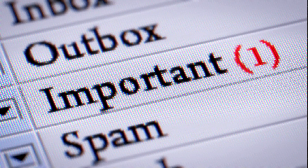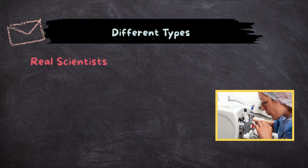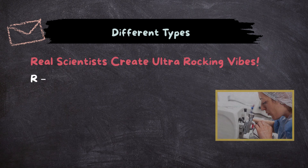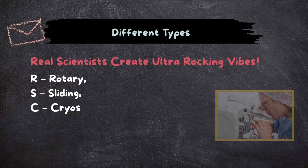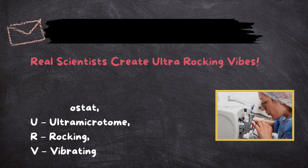Now that we know why Microtomes are important, let's talk about the different types. Mnemonic for Microtome types: 'Real Scientists Create Ultra-Rocking Wipes' — R for Rotary, S for Sliding, C for Cryostat, U for Ultra Microtome, R for Rocking, V for Vibrating microtome.